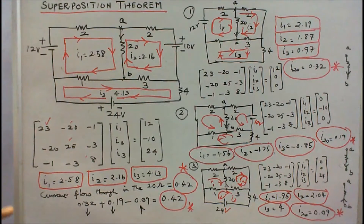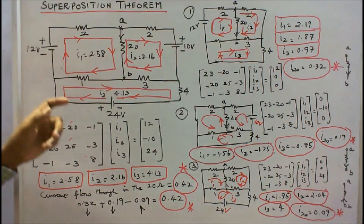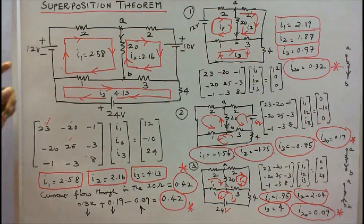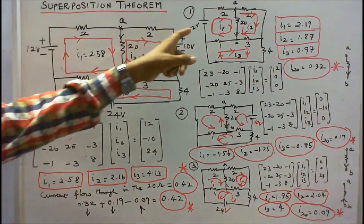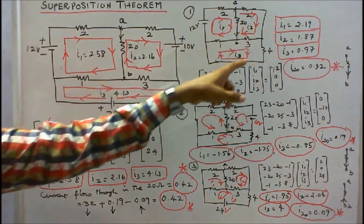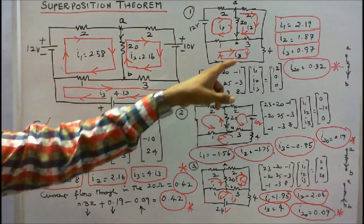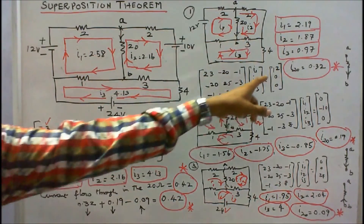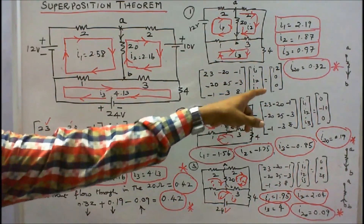Now I apply the superposition theorem. I deactivate two sources and activate only one source at a time. I keep only the 12V source; the other two are shorted, so V2 = 0 and V3 = 0. The resistance matrix remains the same: [23, −20, −1; −20, 25, −3; −1, −3, 8].